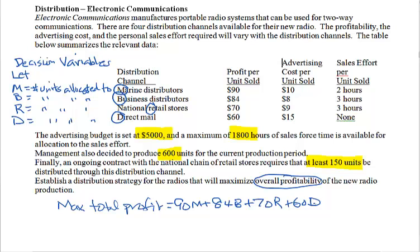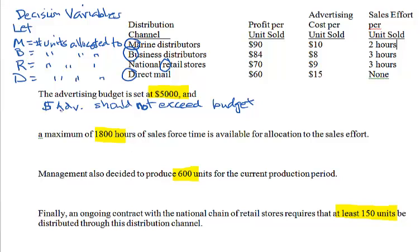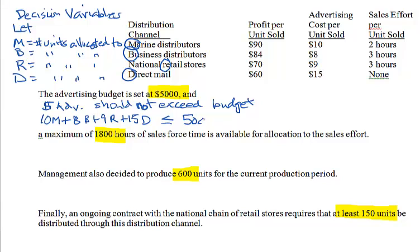The third step is to write the constraints. First, the amount of money spent on advertising should not exceed the budget. To get the total advertising cost, we multiply the unit cost by the quantity for each channel and add the results. So it would be 10M plus 8B plus 9R plus 15D less than or equal to 5,000.